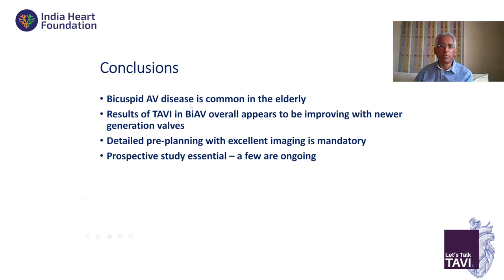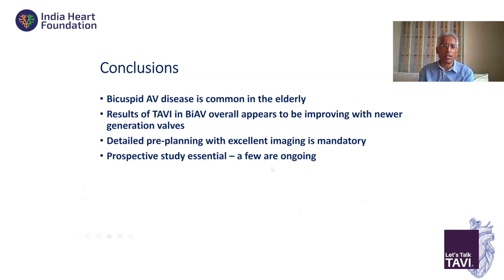In conclusion, bicuspid valve disease is common in the elderly — more so than originally thought. Results with TAVI in bicuspid valve are improving with newer generation valves. The key is detailed planning before the procedure with a really detailed look at the CT, knowing how much calcium there is, where it is, and the position of the coronary arteries. We need prospective study trials, but remember that not every bicuspid — even if categorized as Type 1 or Type 2 — is the same. Calcification and anatomy completely changes the outcome you might find.